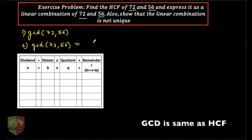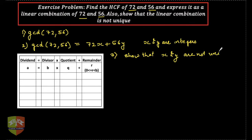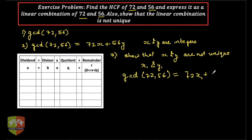We have to express the GCD in terms of 72x plus 56y, where x and y are integers. The third part is to show that x and y are not unique — that means we have to find another set x1 and y1 such that GCD of 72 and 56 equals 72 times x1 plus 56 times y1.